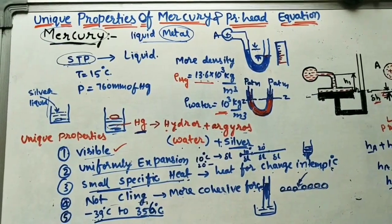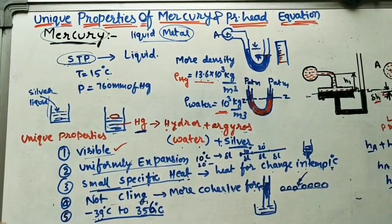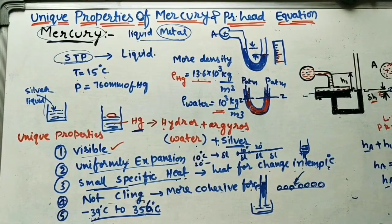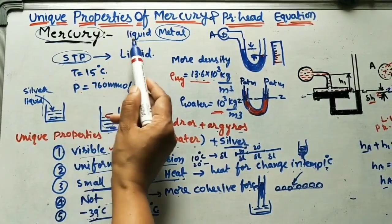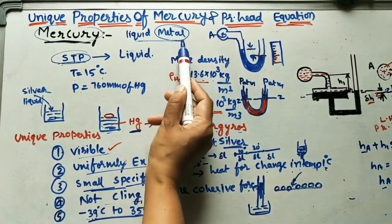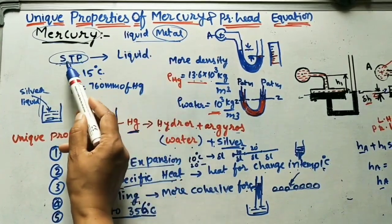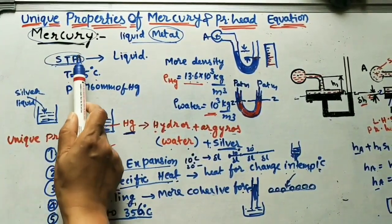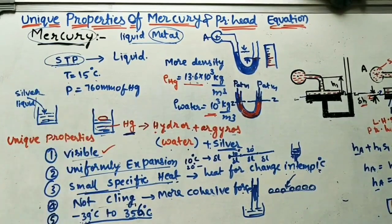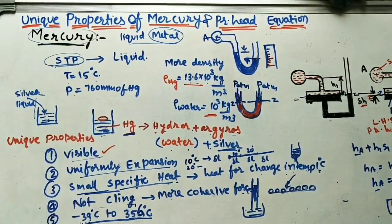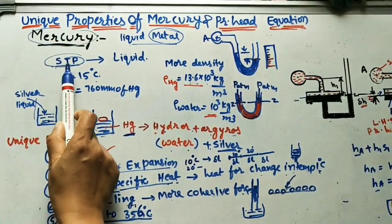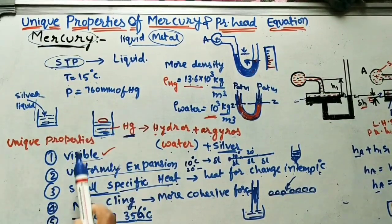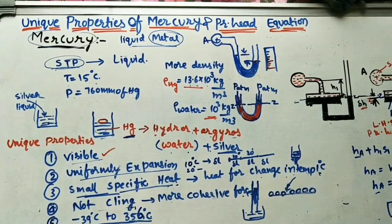In today's class we will study the unique properties of mercury. Mercury is a liquid metal — at STP conditions, meaning standard temperature and pressure, it exists in liquid form. Standard temperature is 15 degrees and standard pressure is atmospheric pressure.